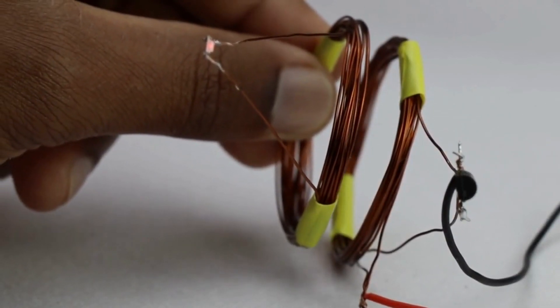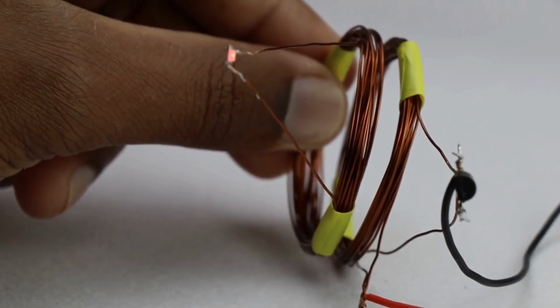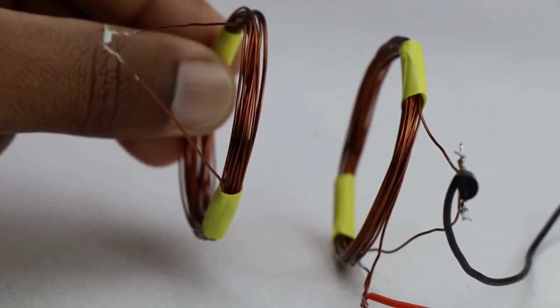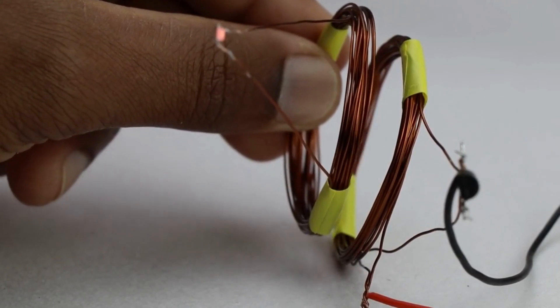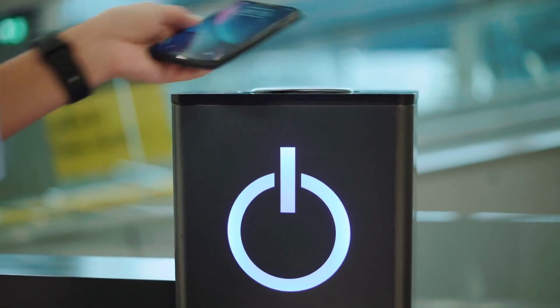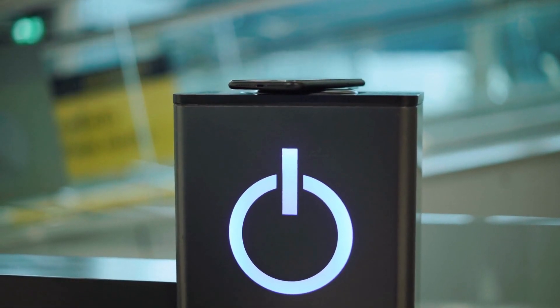Take this for example: the primary coil creates a magnetic field, and the secondary coil, tuned to the same frequency, absorbs this energy and converts it back to electricity. This is how wireless charging pads work for smartphones and electric toothbrushes.